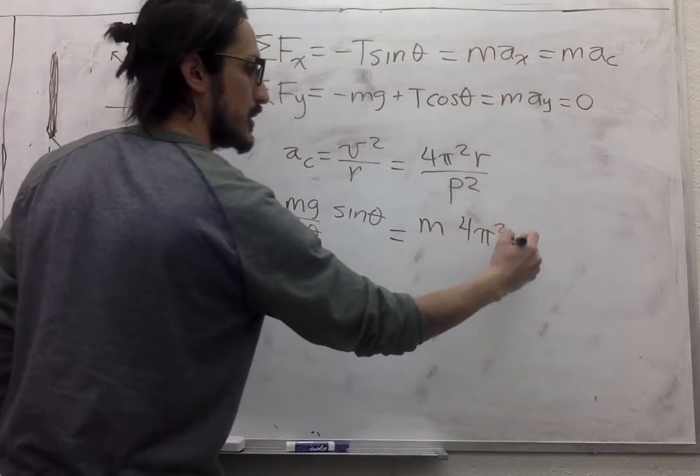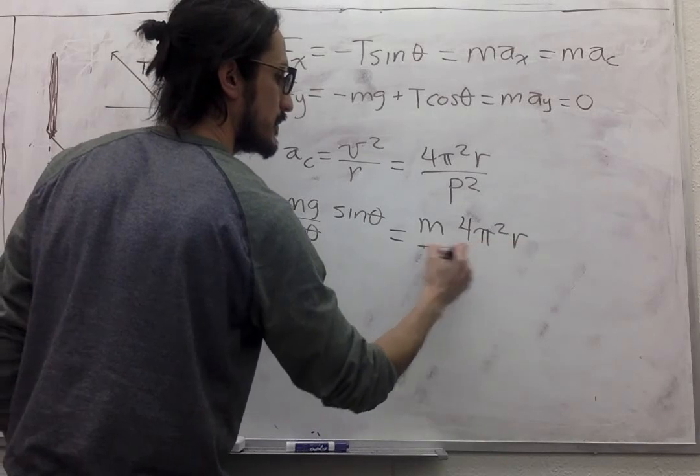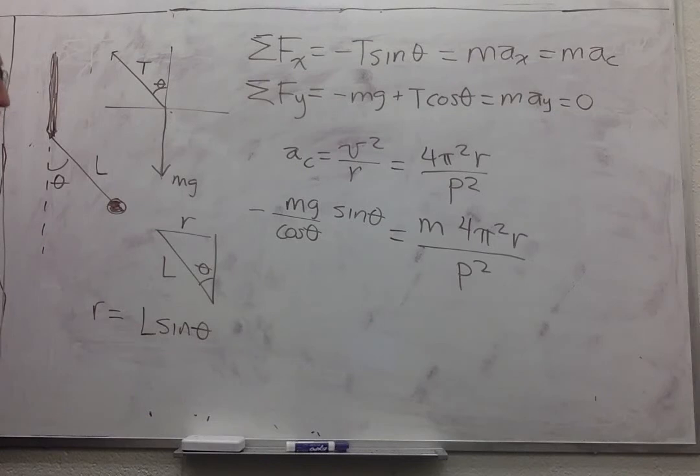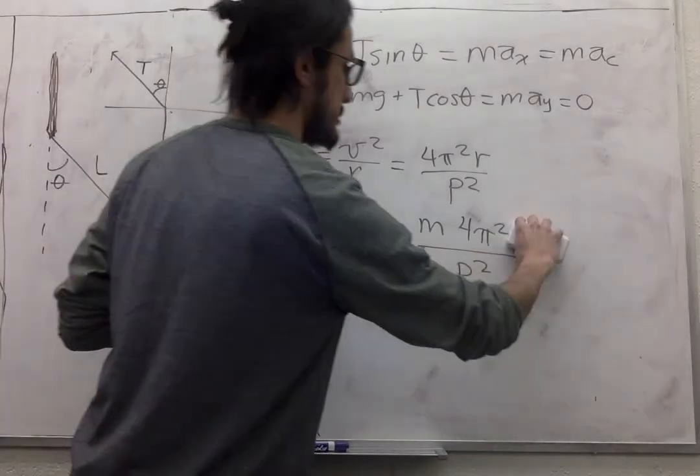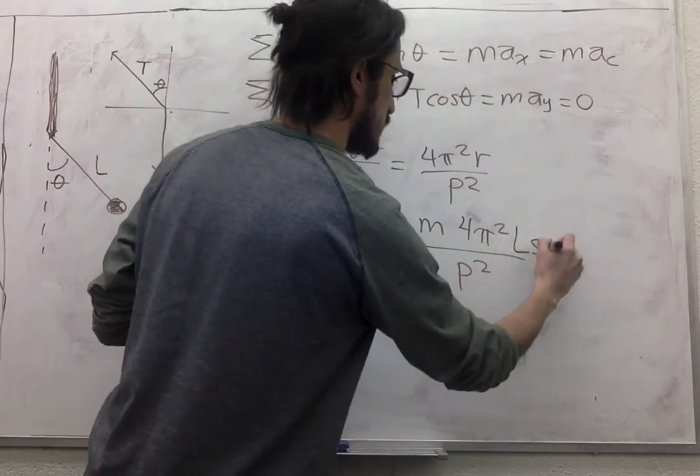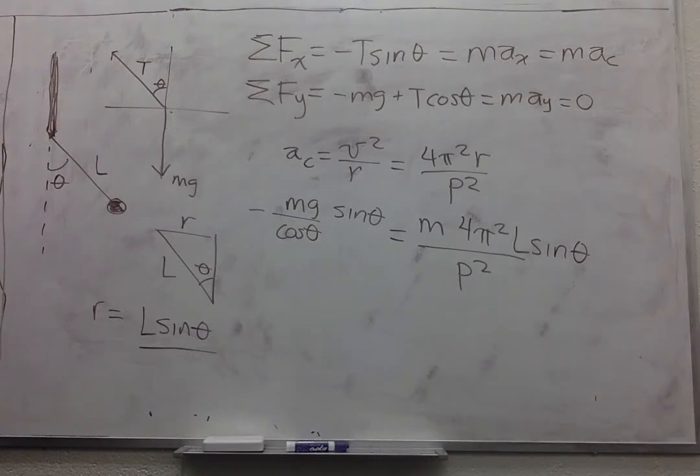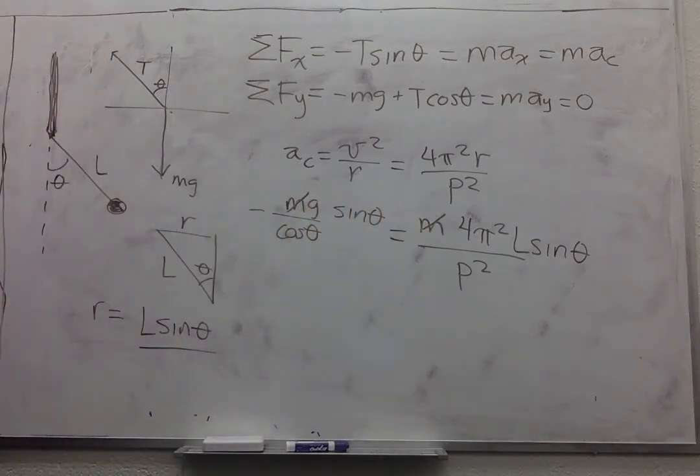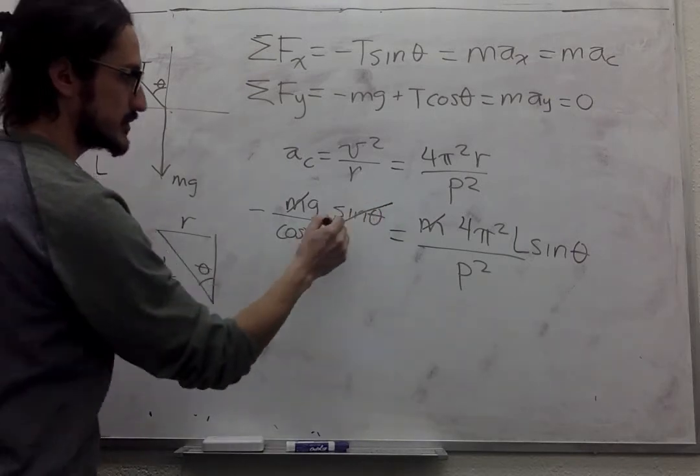So it's 4π² R over P². And R is L sine theta. So we can get rid of the masses. This problem does not depend on the mass. We can get rid of the sine theta.